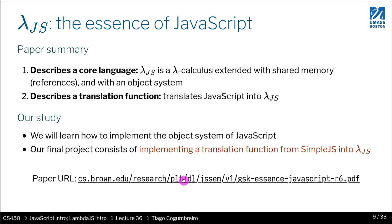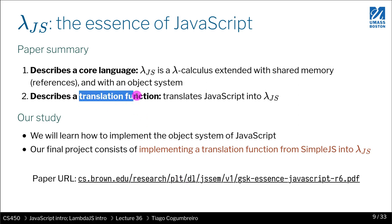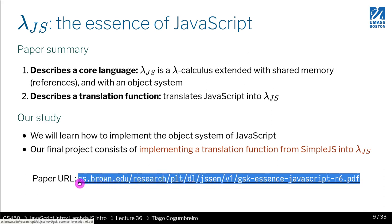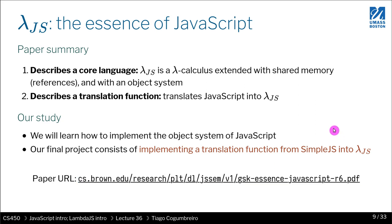So the paper is introducing what we call a translation function, or a compiler. What we're writing is a compiler from SimpleJS to LambdaJS, basically following what the authors introduced in this paper. This is the more research-oriented part of this course — the last module is essentially a research project.